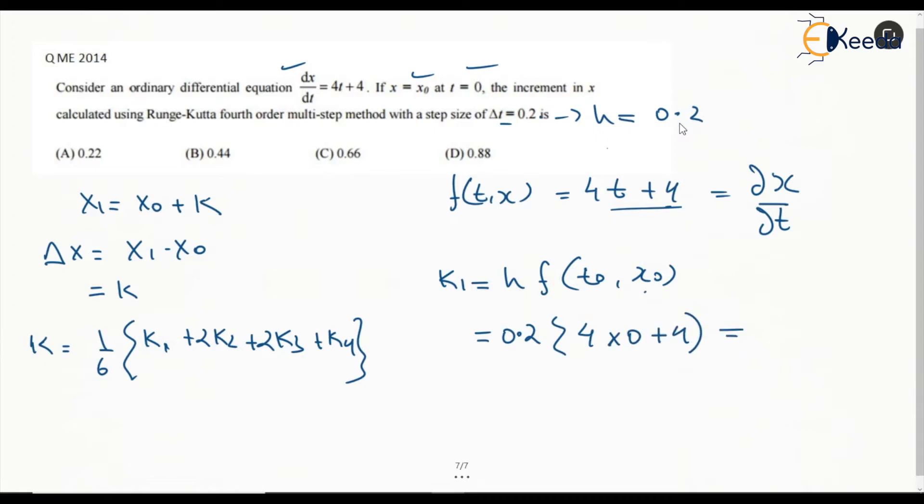Next is K₂. K₂ is h times f(t₀ + h/2, x₀ + K₁/2). But as we saw, it is independent of x, so I'm not calculating x₀ + K₁/2. We'll directly put the t values. This is 0.2 into 4 into, now we know that t₀ = 0 and h = 0.2.